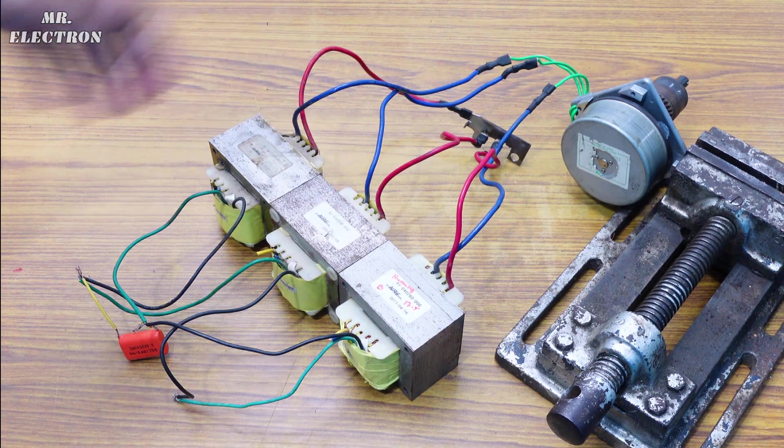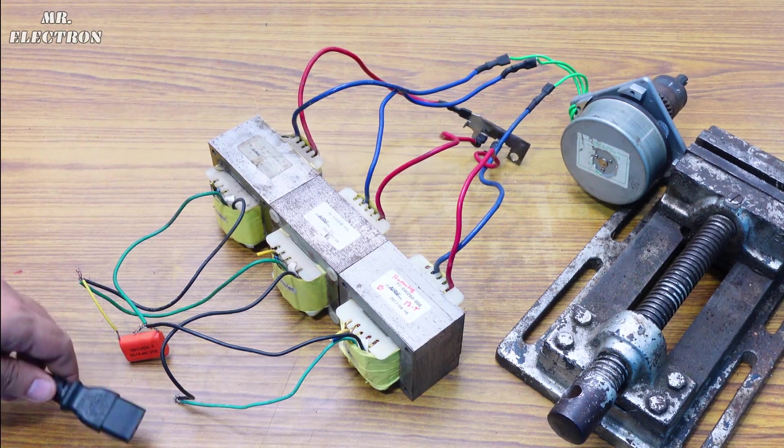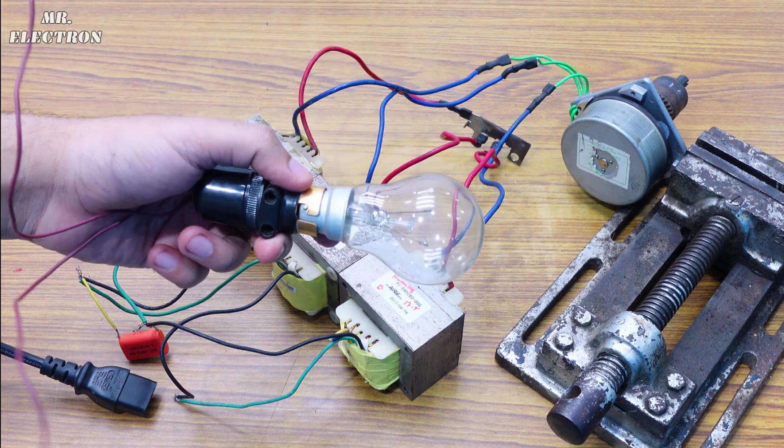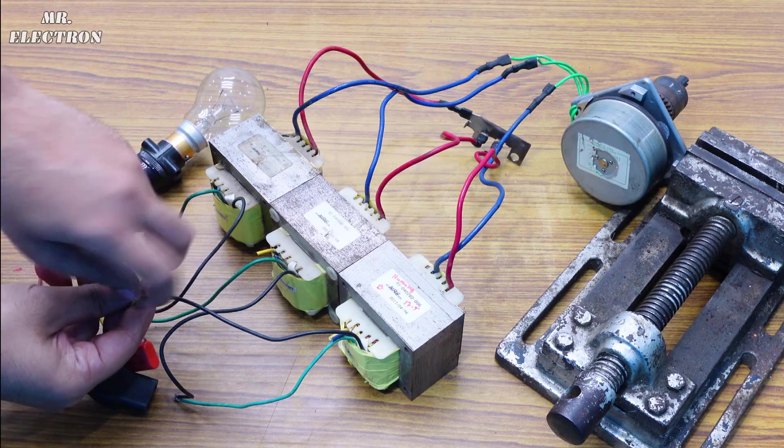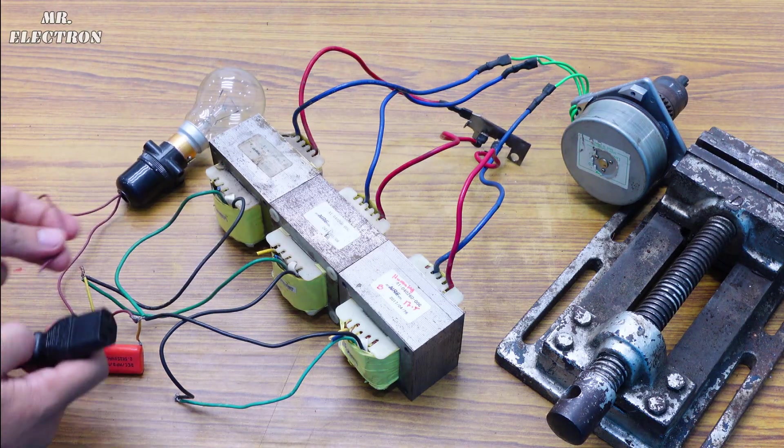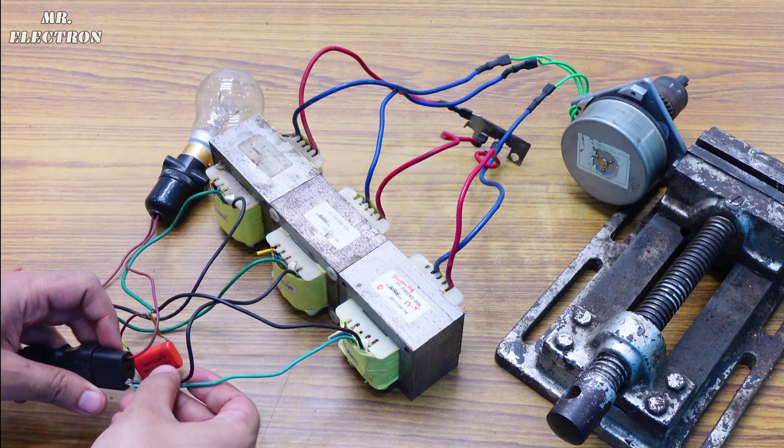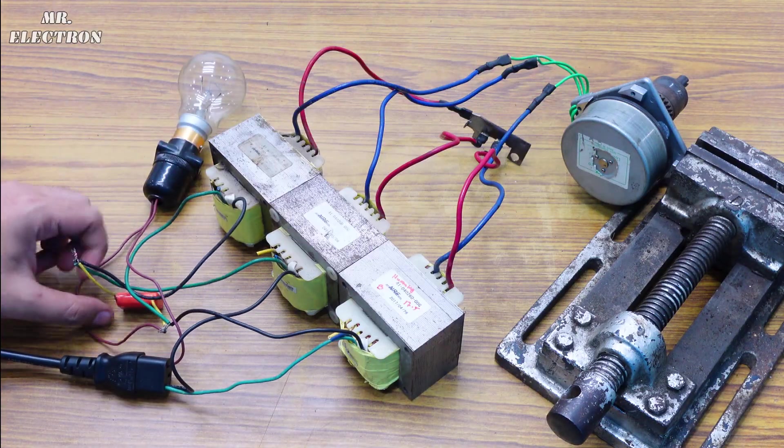Now, before connecting this setup to the mains, I would highly recommend you to add this 220 volts 100 watts bulb in series with the transformers so that if anything goes wrong, all that is going to happen is this bulb growing a little more brighter than before. And so it is going to keep your circuit, your machine and everything safe.